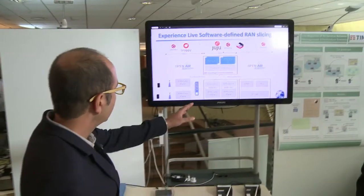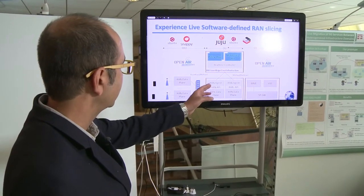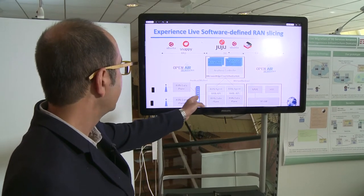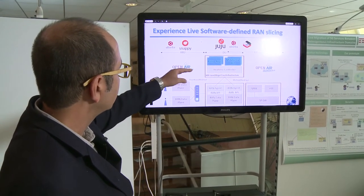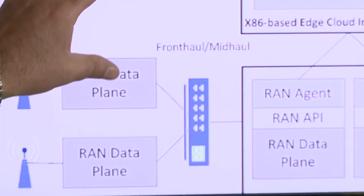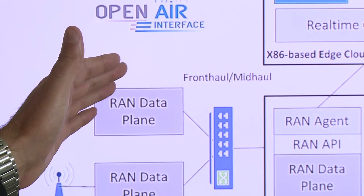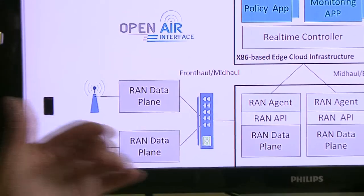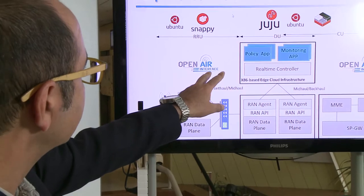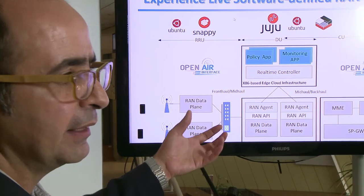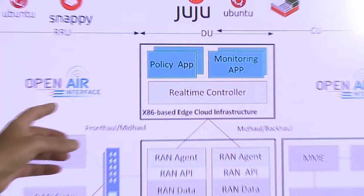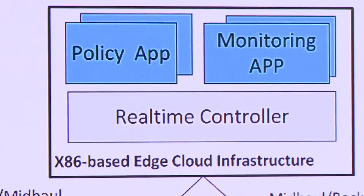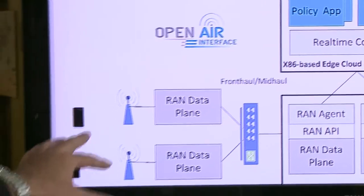In this figure you can see on the right-hand side we have the core network — a standard 4G plus core network. We have a radio access network with a RAN data plane. We also see the control plane: this real-time controller together with the RAN agent, both of which use this control plane protocol through which information is exchanged between the RAN and the controller. We also see two applications: one is the monitoring app to read the status of the underlying RAN, and the other is the policy app which enforces policy back to the underlying RAN data plane. We also have remote radio units and a smartphone.